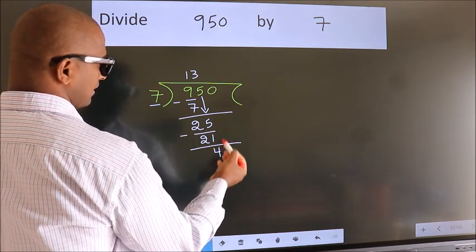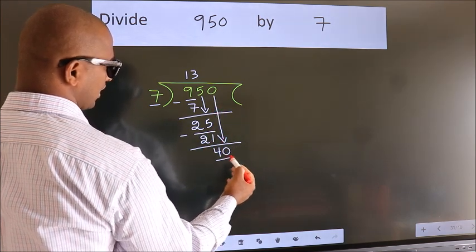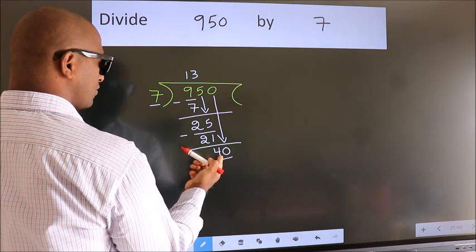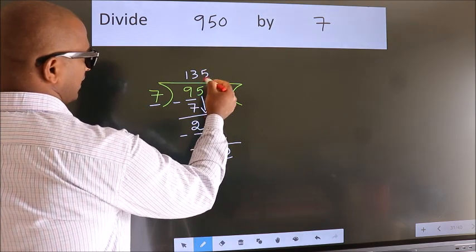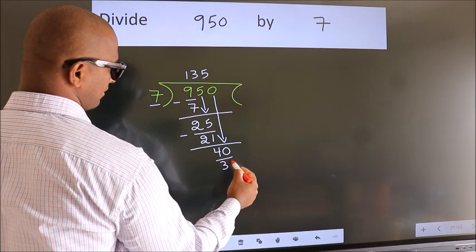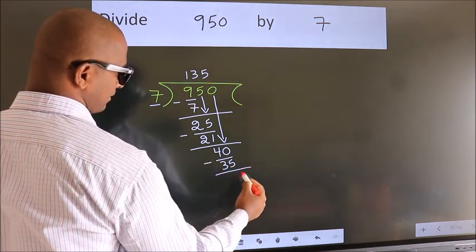After this, bring down the beside number, so 0 down, so 40. A number close to 40 in 7 table is 7 5s 35. Now we subtract, we get 5.